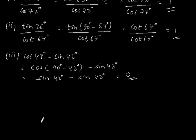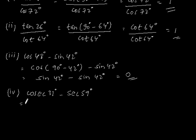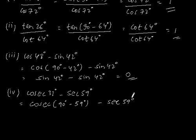The fourth part: cosec 31 degree minus sec 59 degree. This can be written as cosec (90 degree minus 59 degree) minus sec 59 degree. Cosec (90 degree minus 59 degree) becomes sec 59 degree, so sec 59 degree minus sec 59 degree is equal to 0.